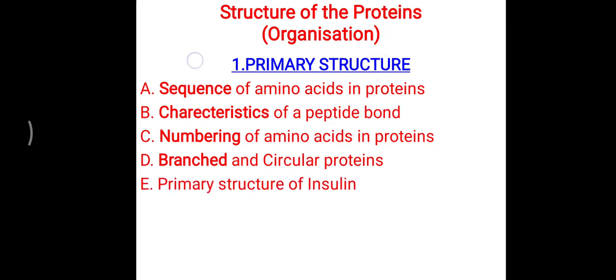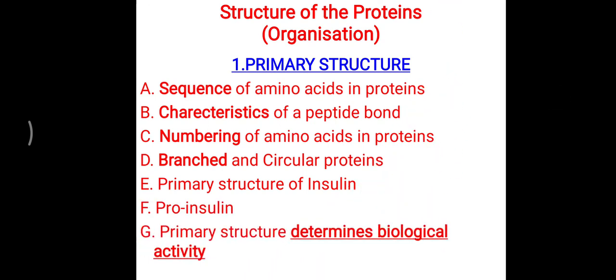To understand primary structure, remember the structure of insulin and pro-insulin, how pro-insulin converts to insulin, and the example of sickle cell anemia — all of which demonstrate the importance of understanding primary structure in the organization of protein. That is all about the primary structure of protein. Next, we will look at the secondary structure in the next video.